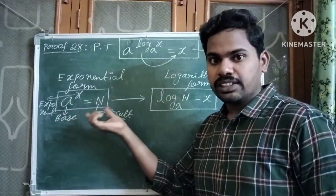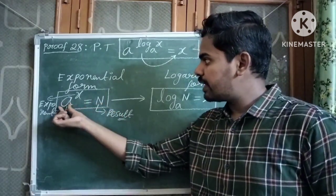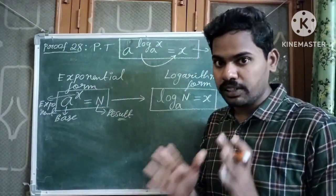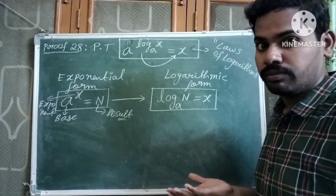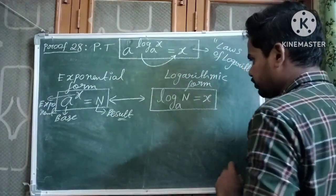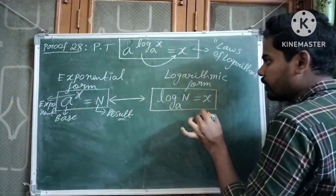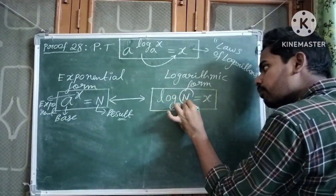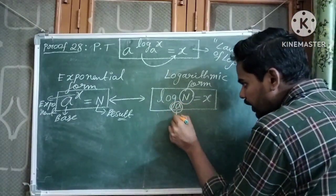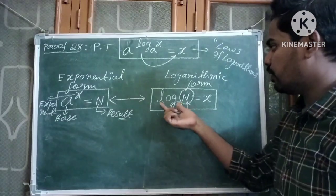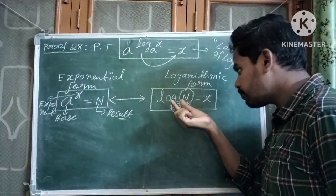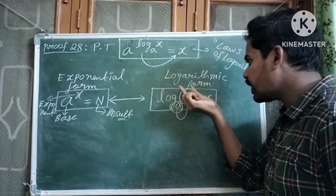Exponential form tells us the value obtained when the base is multiplied by itself x times to give that result. What about logarithmic form? Logarithmic form tells us the number of times the base must be multiplied by itself to get n.